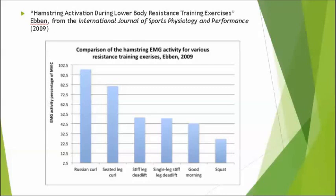The most interesting discovery during this study was that a Russian curl, also known as a Nordic curl, elicited an incredible 95% maximum voluntary contraction from the hamstrings. That is phenomenal! One could say that the Russian curl is 280% more effective than the squat for working the hamstrings.